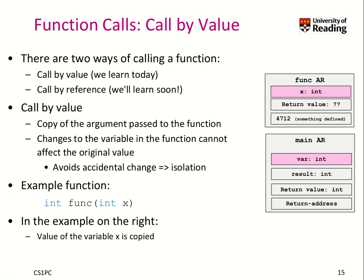Now let's look into the principle called call by value, which describes how you communicate information between functions. There are generally two ways of calling a function: call by value, which we learn today, and call by reference, which we learn in our pointer lecture in another week.